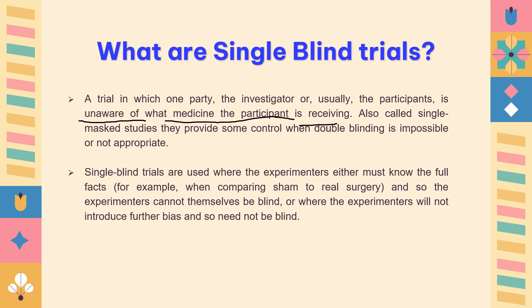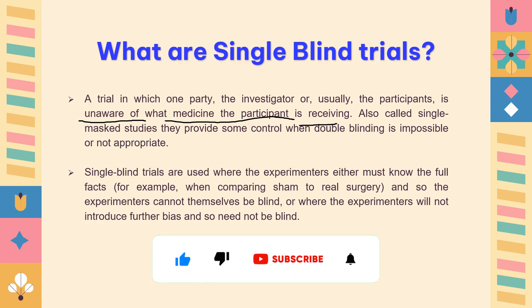Single blinded trials are used where experimenters or researchers must know the full facts of the study — for example, when comparing placebo and real surgery, or sham and real surgery. The study allocation should still be fair, and experimenters should not introduce their own personal bias. Blinding is important because personal bias should not affect trial conduct or outcome.